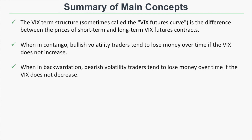Let's recap what you've learned. First, the VIX term structure or VIX futures curve represents the difference between the prices of short-term and long-term VIX futures contracts. When the VIX term structure is in contango, longer-term VIX futures contracts are more expensive than near-term contracts. When the curve is in contango, bullish volatility positions tend to lose money over time if the VIX does not increase — because near-term VIX futures decay in price, leading to poor performance in bullish volatility trades.